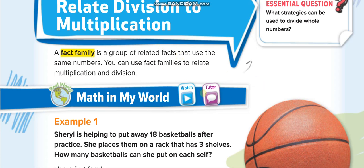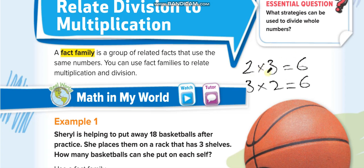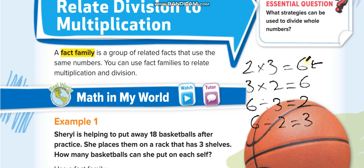Let's look at this example. If I write 2 times 3 equals 6, I can also write it the opposite way: 3 times 2 equals 6. Now if I want to write these in division, I start from the product: 6 divided by 3 equals 2, and 6 divided by 2 equals 3. These four number sentences together are called a fact family.